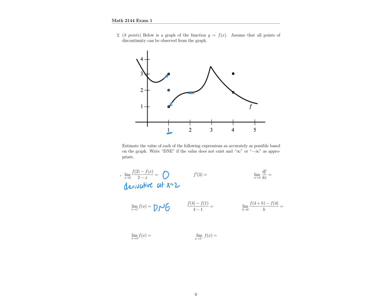On to the next one — the limit as x approaches 4. This one is defined here, and we have an open circle, but notice that the two-sided limits are equal; they're approaching that same value. So the value of this limit is going to be equal to 2.